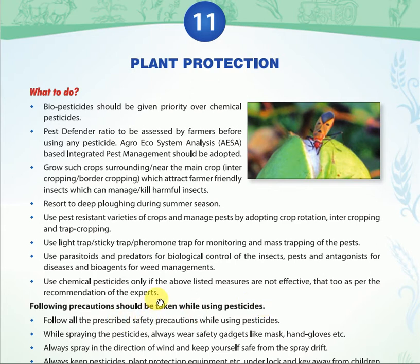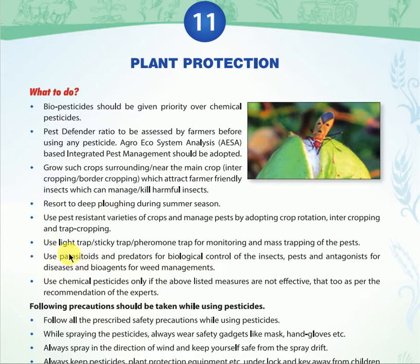Use chemical pesticides only if the above listed measures are not effective, and only as per recommendations from experts. These points are important. Agro ecosystem analysis and these points are easy to read. Light traps, sticky traps, and pheromone traps are the most suitable solution for mass trapping of pests.